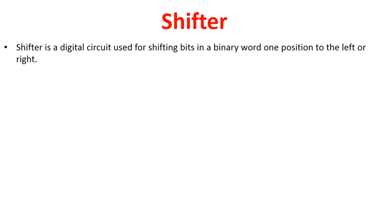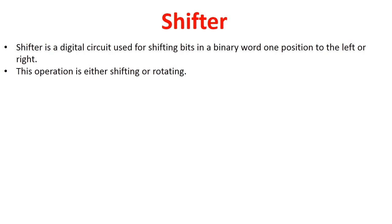Sabse pehle baat karte hai shifter circuits ke baare me. What actually is meant by a shifter? So basically a shifter is a digital circuit which is used for shifting bits in a binary word one position to the left or to the right. Whatever the data sequence is given, we can shift it to the left or right. Such circuits are called shifter circuits.